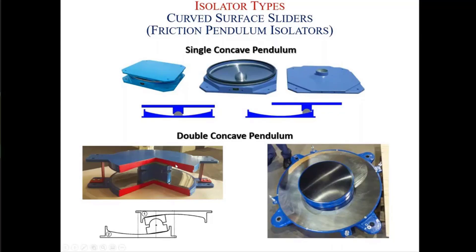Then double concave pendulum isolators were invented by Victor Zayas. Now there are two concave plates, so the displacement is split — for example, 25 centimeters on the lower part and 25 centimeters on the upper part. So with a 1-meter diameter isolator on the bottom, you only need a 50 centimeter diameter isolator on top. Additionally, since there are two sliding surfaces, the heat effects are halved as well.